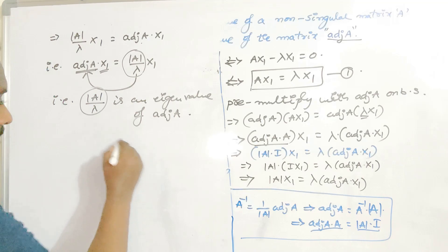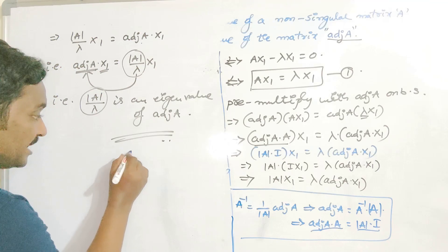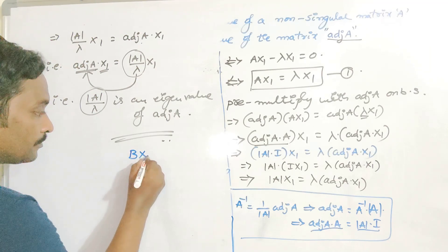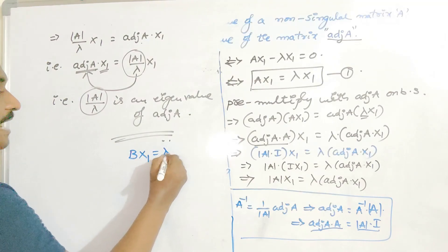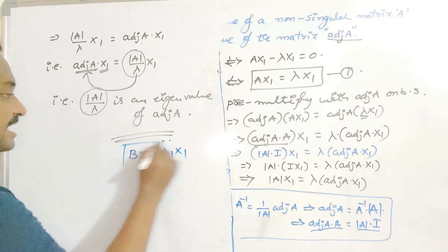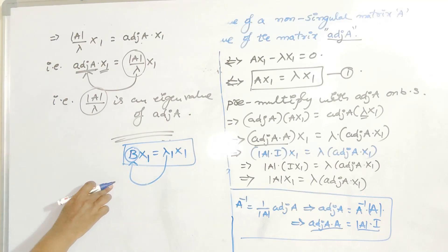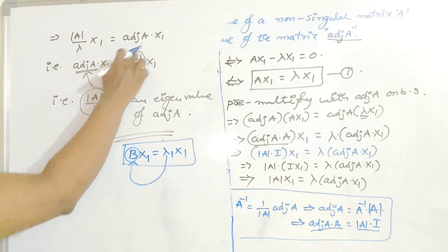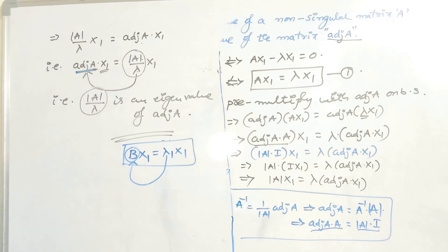Do not forget this important point: if we have matrix B times eigenvector x1 equals lambda1 times x1, then lambda1 is the eigenvalue of matrix B. In the same way, here adjoint(A) times x1 equals det(A) by lambda times x1, which is why det(A) by lambda is the eigenvalue for adjoint(A), according to the definition of eigenvalue. In the next video I will give more examples and properties on eigenvalues. Thank you.